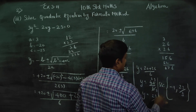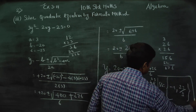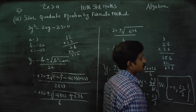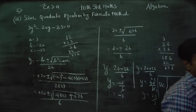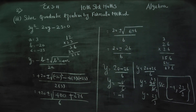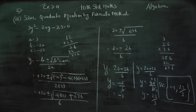Therefore, your solution set will be minus 1 comma 23 by 3. That is your final answer. We have totally used the formula method for solving this quadratic equation. Thank you.